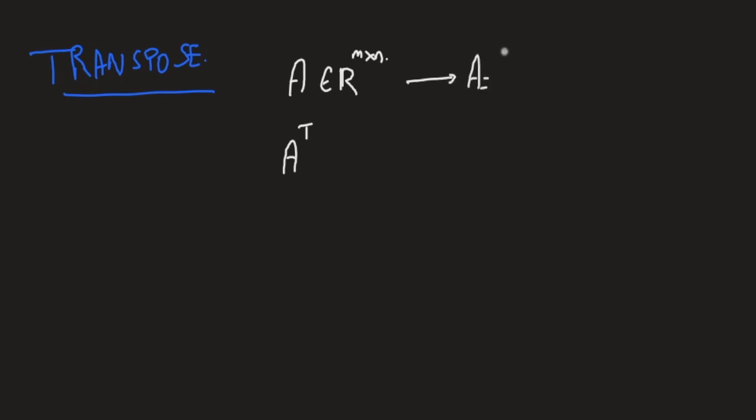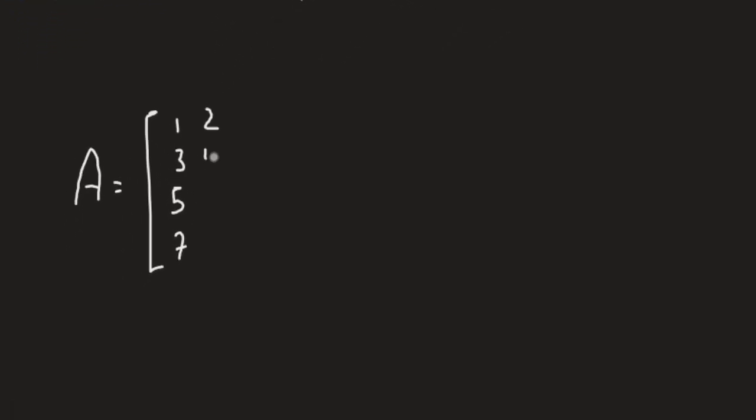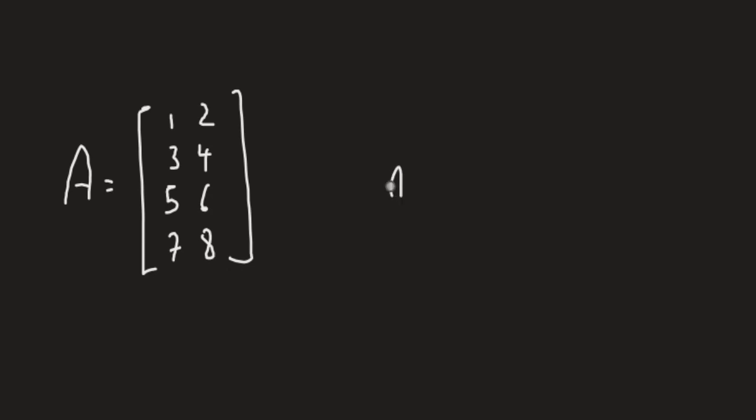In other words, if A is denoted explicitly by its elements Aij, then A transpose is defined as Aji. So we see that the indices interchange. For example, if I'm given the following matrix A: 1, 3, 5, 7, 2, 4, 6, 8, then A transpose is obtained by grabbing each column and laying it down as a row. So the first column is now the first row of A transpose: 1, 3, 5, and 7. Likewise, the second column of A is now the second row of A transpose: 2, 4, 6, and 8.